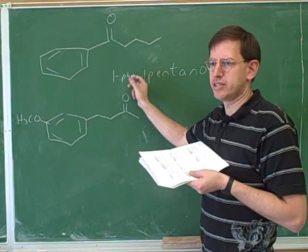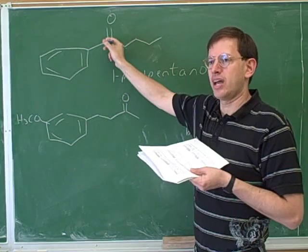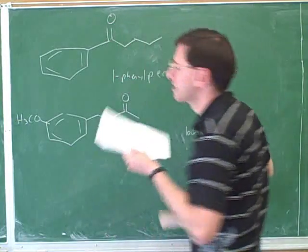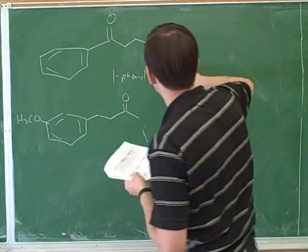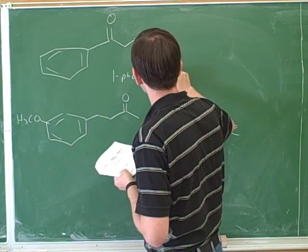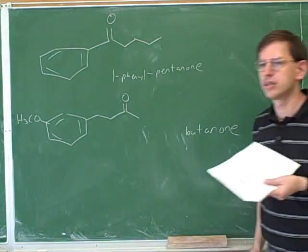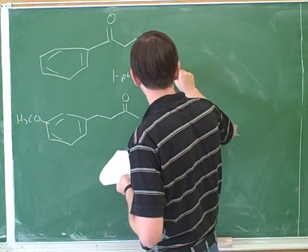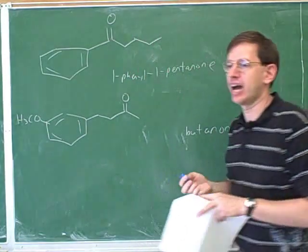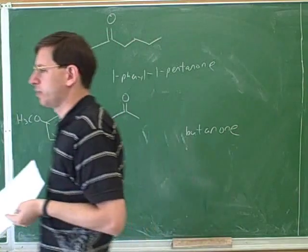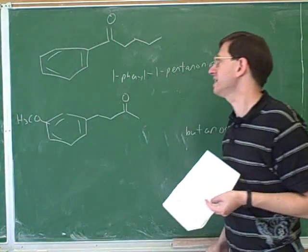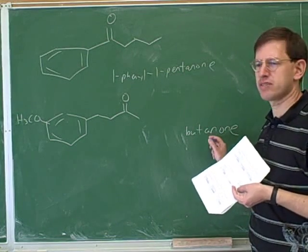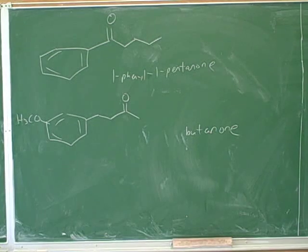Let's back up for a second. We forgot something up here. We said where the phenyl group was, but we didn't say where the ketone group was. After all, the ketone group could have been here or here. 1-phenyl, 1-pentanone. That's right.